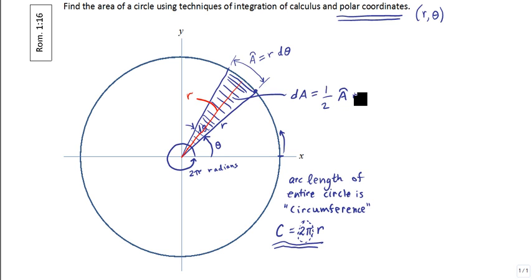So, let's put this information in for the arc length. So, that means that dA is equal to one half r d theta times r,